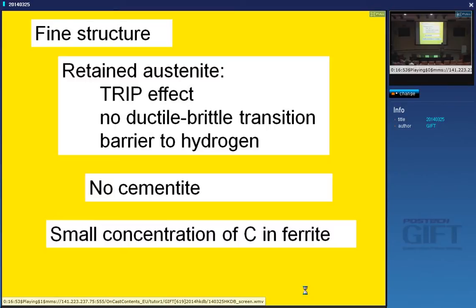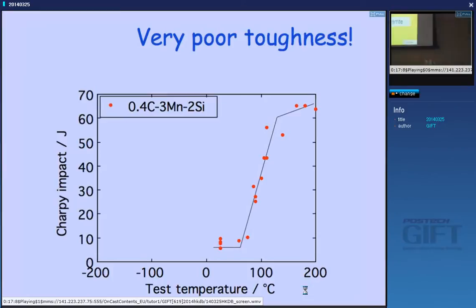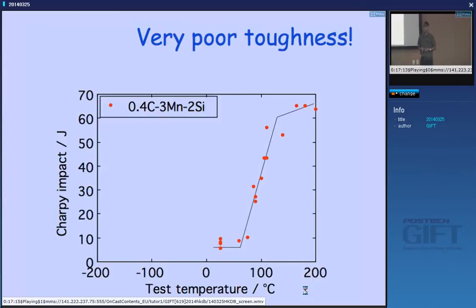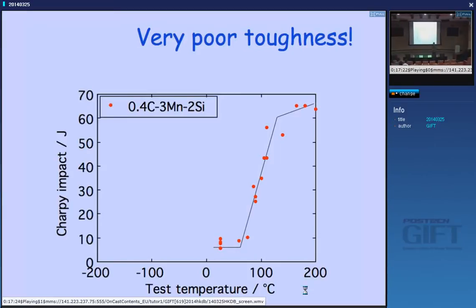So we have all these advantages of this beautiful structure obtained by simple phase transformations — no need to deform. Let's see what the toughness of this material looks like. Is that good toughness? It's actually very poor toughness — look at the impact transition temperature, it's around 100 degrees centigrade. This would be useless as a structural material. So in spite of everything wonderful about this structure, something is very wrong — we have missed something.